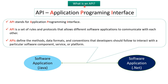In this video tutorial, I will explain what is an API. API stands for Application Programming Interface. API is a set of rules and protocols that allows different software applications to communicate with each other.